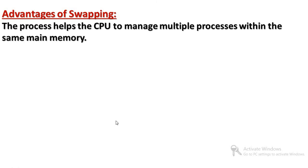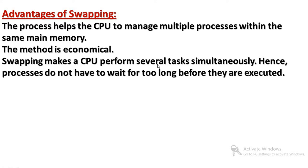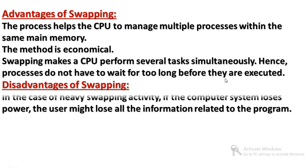Advantages: swapping helps the CPU to manage multiple processes within the same memory. Multiple processes can run and execute. Processes do not have to wait long. Swapping makes the CPU perform several tasks simultaneously. Processes do not have to wait too long before they are executed. When the process is swapped, again it is swapped into the main memory for execution.